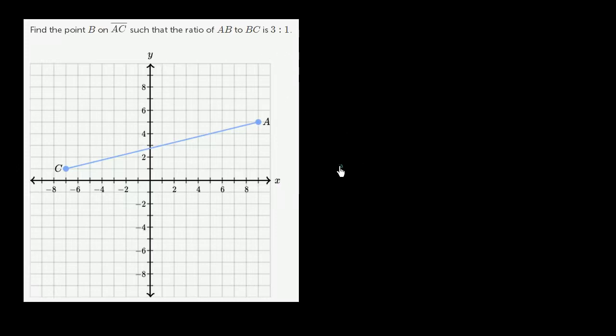So let's think about what they're asking. If that's point C, I'm just going to redraw this line segment to conceptualize what they're asking for. And that's point A. They're asking us to find some point B, where the distance between C and B is this distance right over here.